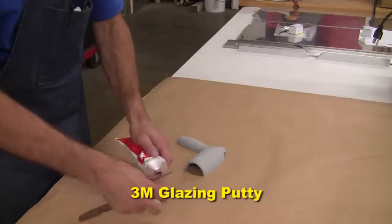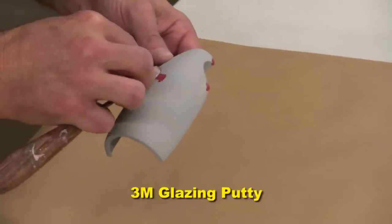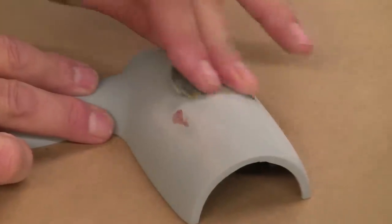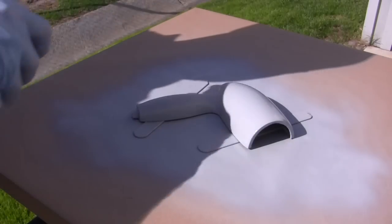Using fast drying glazing putty, we fill any minor imperfections on the surface. Once dried, we sand smooth and apply more primer to the surface to finish sealing.